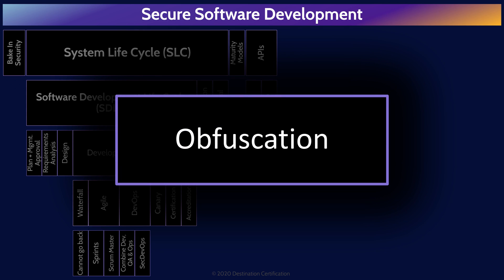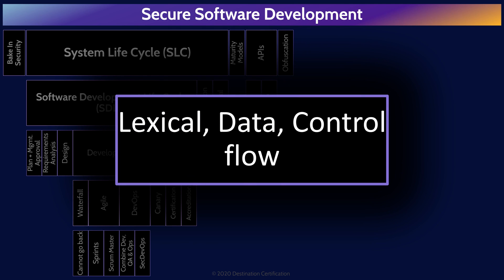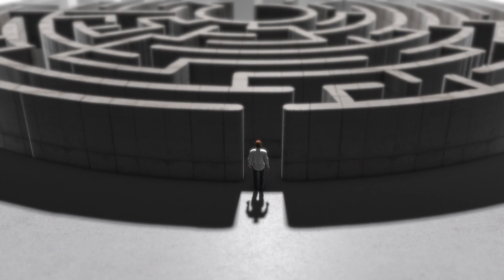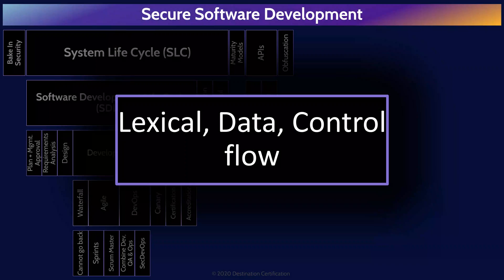Code obfuscation is the deliberate act of creating code that is difficult for humans to understand — to make code more difficult to reverse engineer and conceal the purpose of the code. It is used when we don't want unauthorized people to understand how our code works and what it does. There are three major methods: lexical obfuscation modifies the look of the code, changing comments, removing debugging information, and changing the format — it is the easiest but weakest form. Data obfuscation modifies the data structure and use of variables. And control flow modifies the flow of control through the code, reordering statements, methods, loops, and creating irrelevant conditional statements.